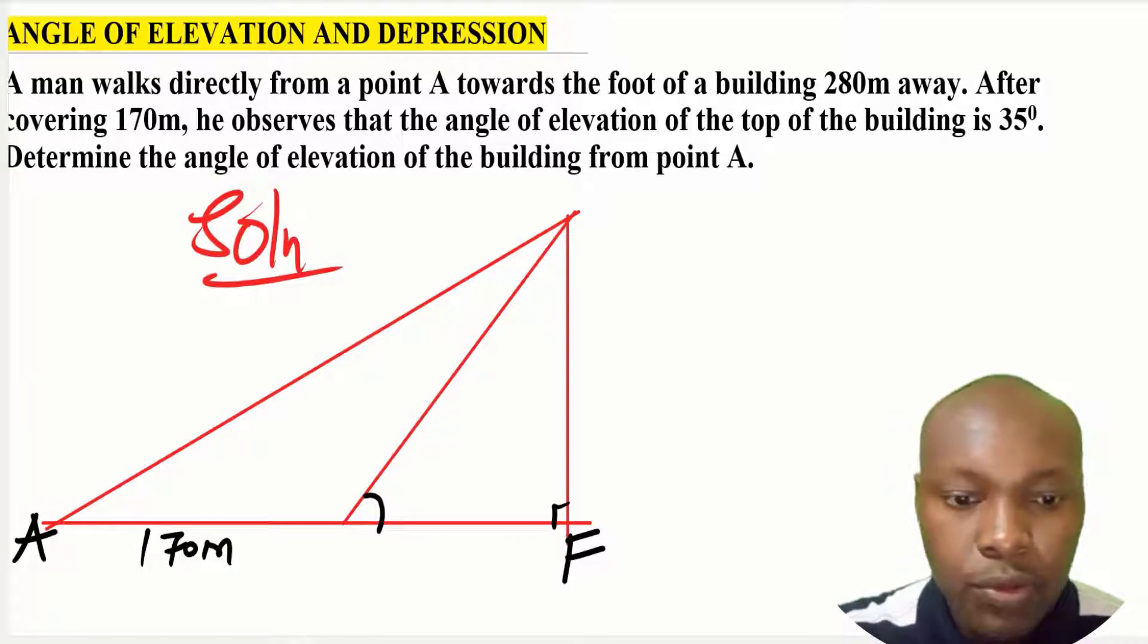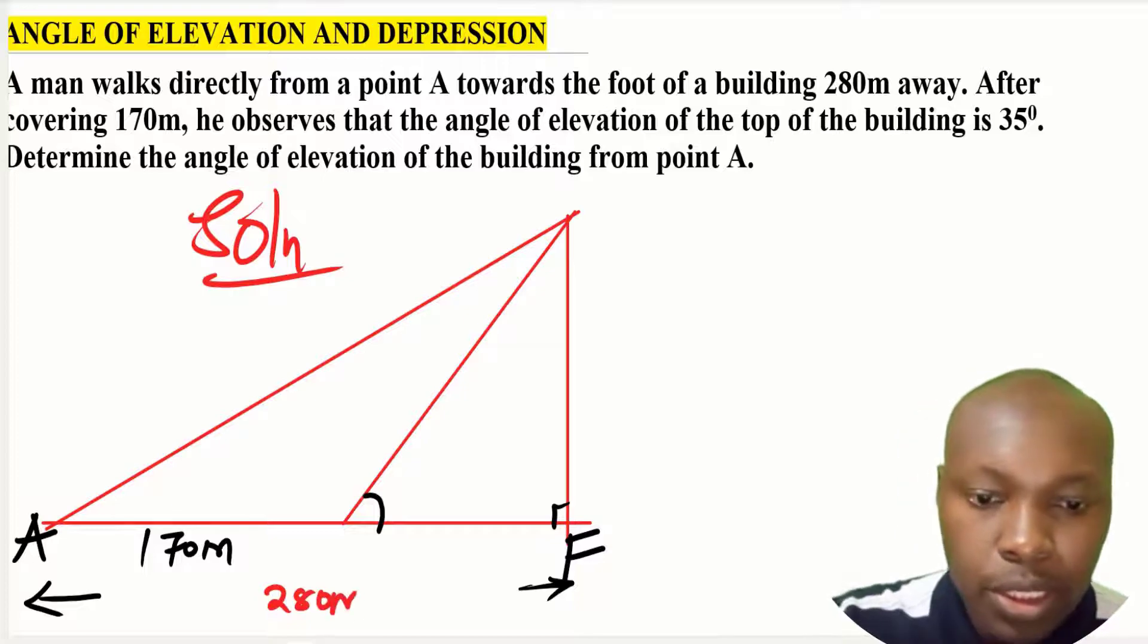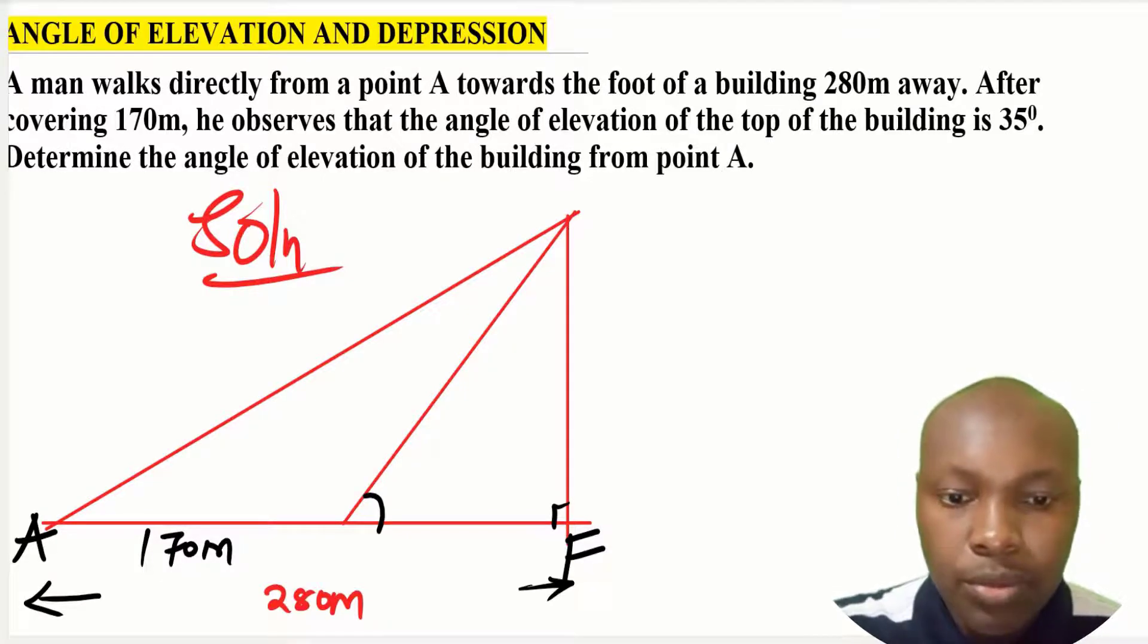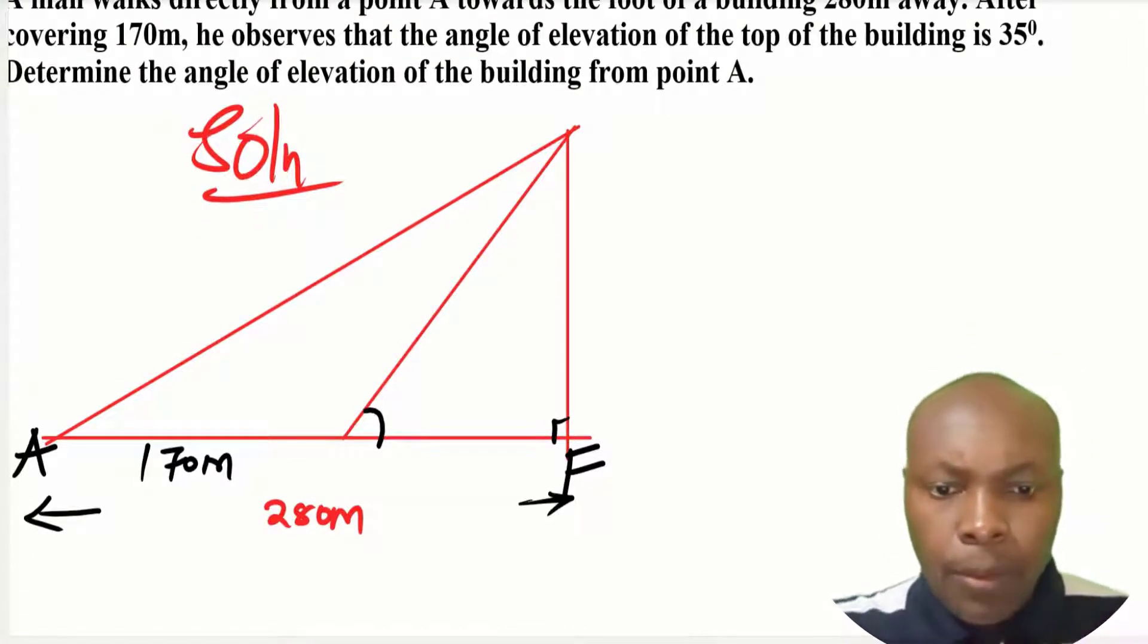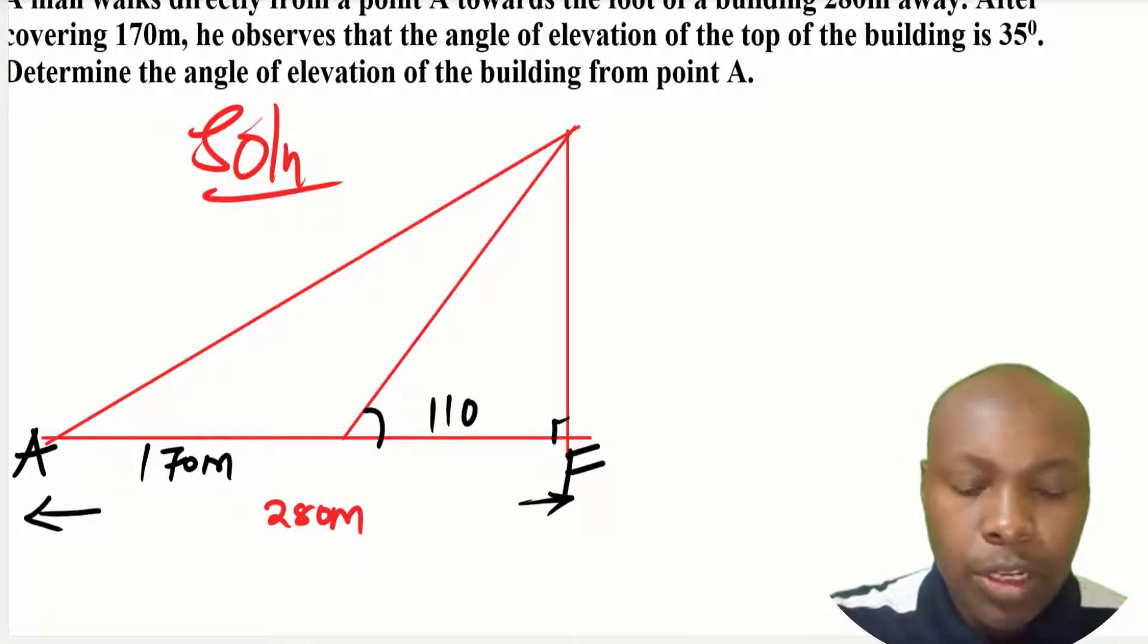So the foot of the building, and then we have the distance given from A to a point. So after covering that distance of 170 meters, that is where he observed the angle of elevation 35 degrees. The whole distance from A to the foot of the building is 280 meters.